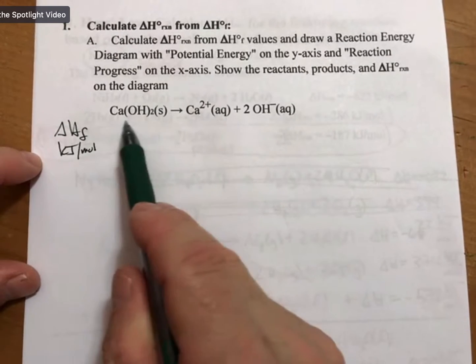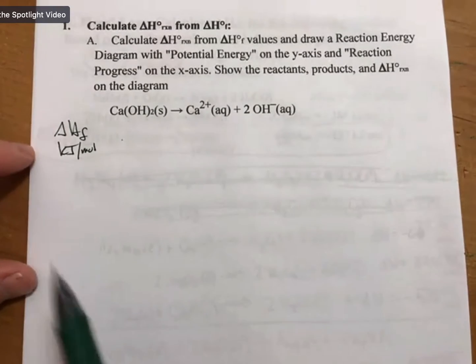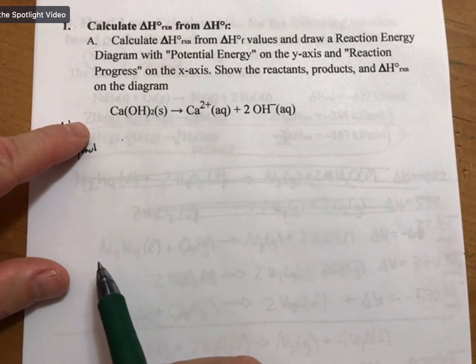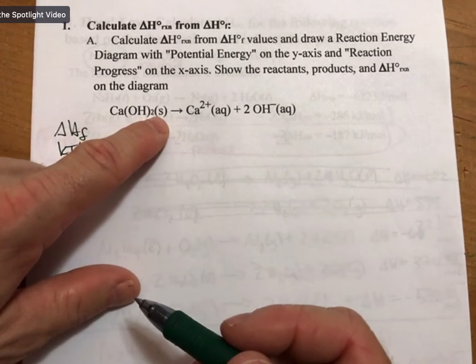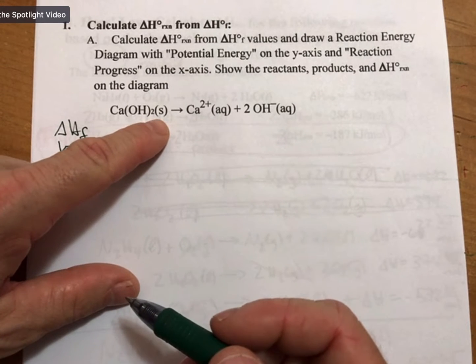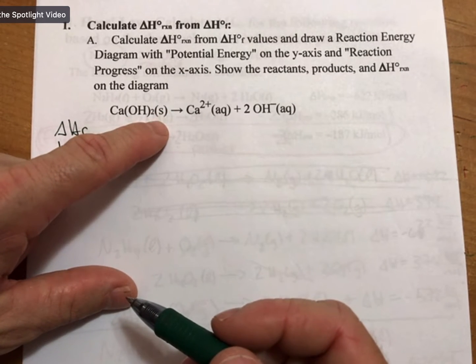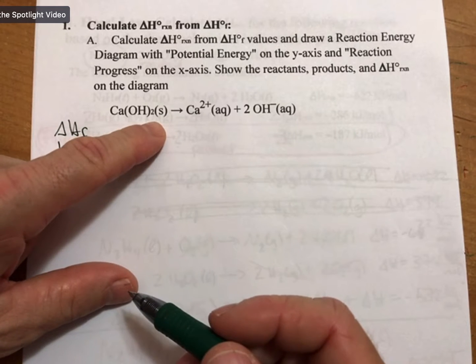We'll organize by writing the numbers under each compound. For calcium hydroxide, we need the solid form. On your conversion equation sheet, there's both solid and aqueous, and it makes a difference, so make sure you get the solid one.